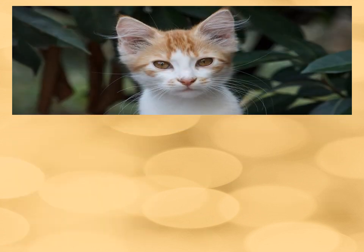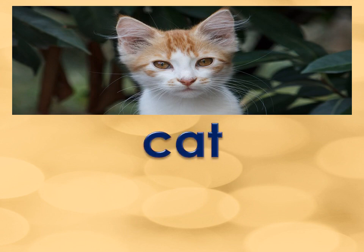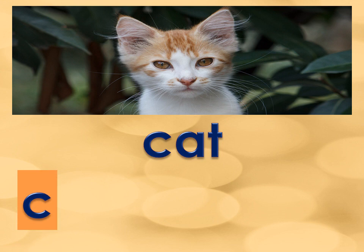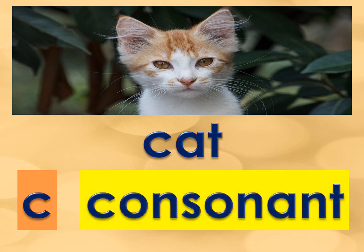Now, let us identify this picture. What is this? That's correct! It's a cat. Now, what is the beginning letter of the word cat? That's correct! It's letter C. Now, is letter C a vowel or a consonant letter? That's correct! It's a consonant letter.